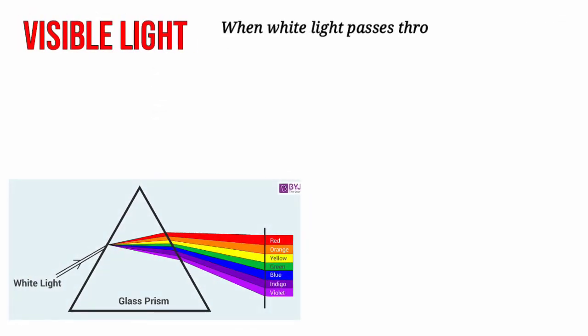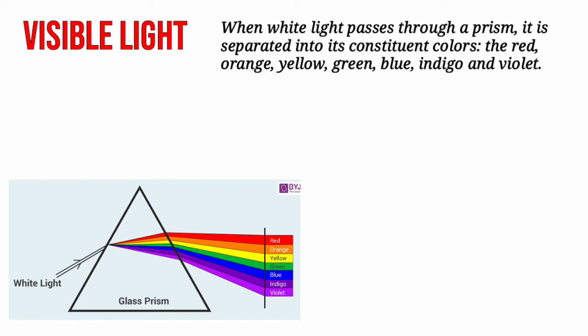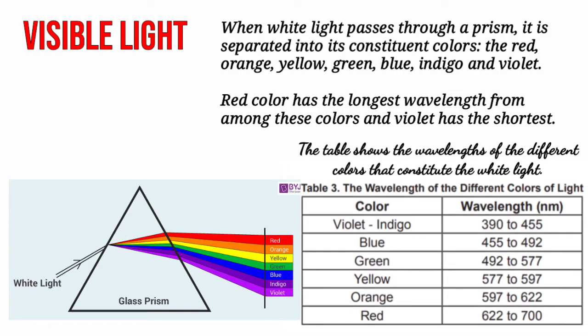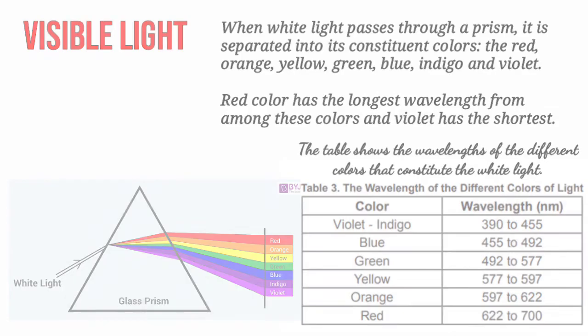Next is the visible light. When light passes through a prism, it is separated into its constituent colors: the red, orange, yellow, green, blue, indigo, and violet. Red color has the longest wavelength from among these colors and violet has the shortest. The table shows the wavelengths of the different colors that constitute the white light.